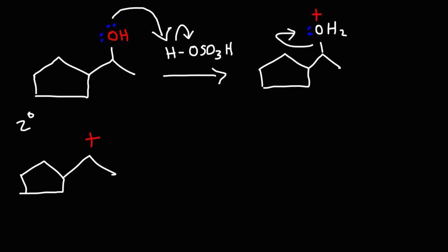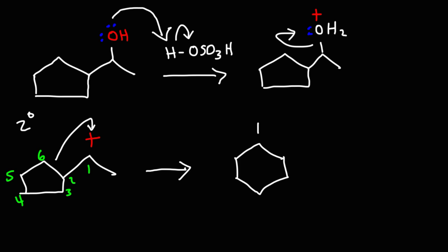Stability is the driving force for carbocation rearrangements — a carbocation will rearrange to find the most stable configuration possible. Let's number these carbons accordingly. The bond between carbons 2 and 6 will break, and the electrons in that bond will be used to connect carbon 1 and carbon 6. So 6 is now attached to carbon 1, and we still have the methyl group attached to carbon 1. Carbon 2 lost the bond but didn't regenerate it, therefore the plus charge is on carbon 2. Right now we have a secondary carbocation, but a hydride shift will occur to give us a more stable tertiary carbocation.